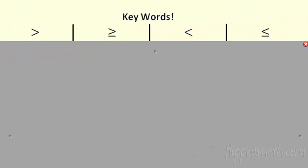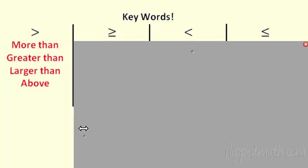Let's hook it up with some key words. There's some words and phrases to help you out for each symbol. I've got my greater than, greater than equal to, less than, and less than equal to. If I see words like more than, obviously greater than is going to be greater than, larger than, or above, that means everything greater than.